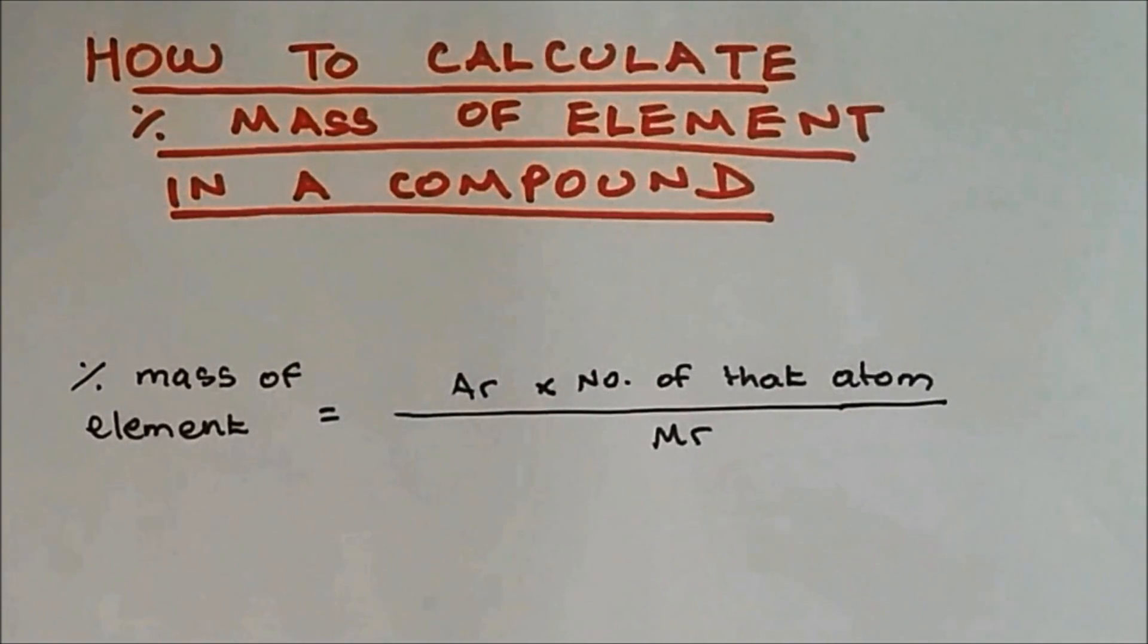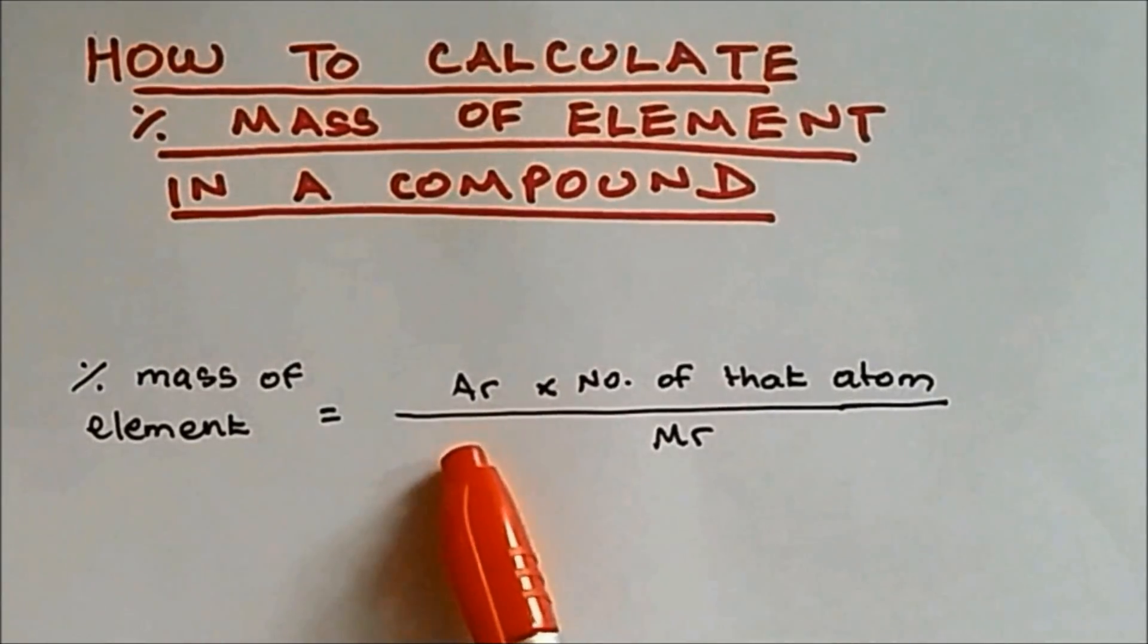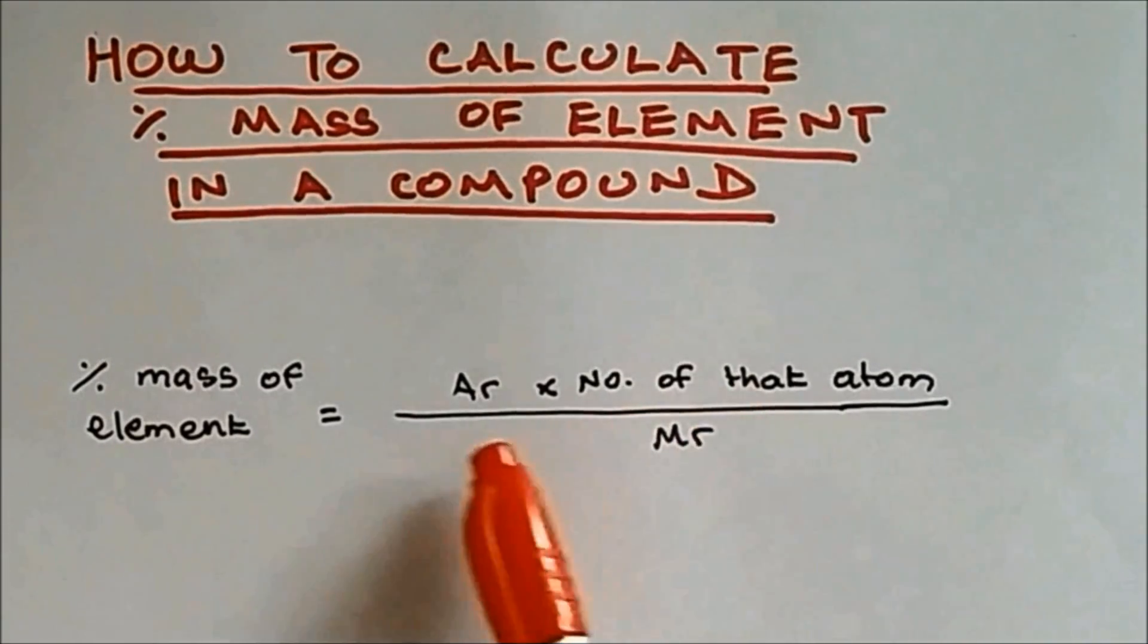Hi everyone, welcome to Science Tutorial For You. In this video I'm going to show you how to calculate percentage mass of element in a compound. The formula to calculate percentage mass of element is you take the AR of that element and multiply it by the number of that particular atom that you're interested in.